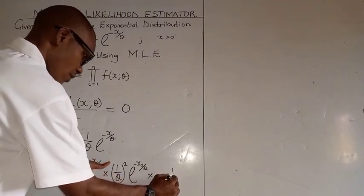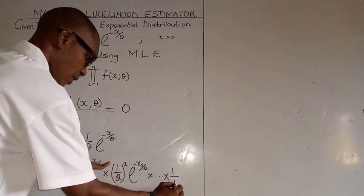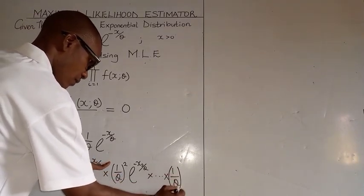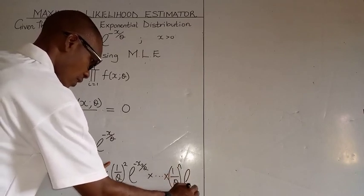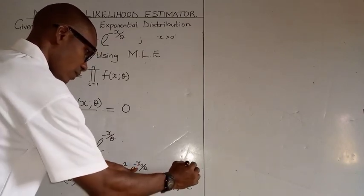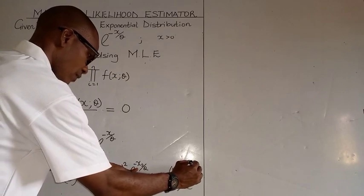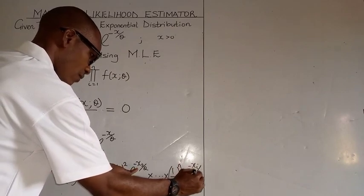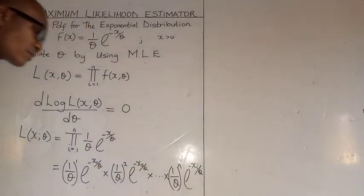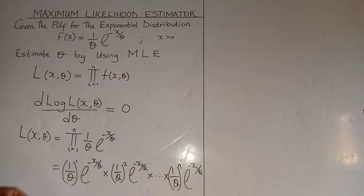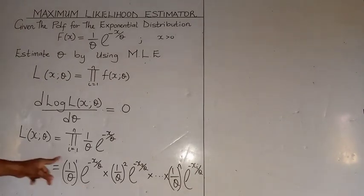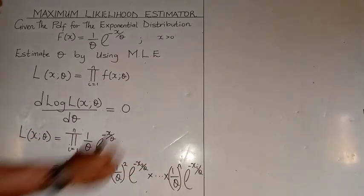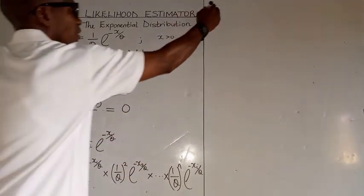For we to get 1 over theta to the n, times exponential of minus x_n over theta. So, if we get something like this, all we need to do is to put them together. If we put it together, we get something like this.